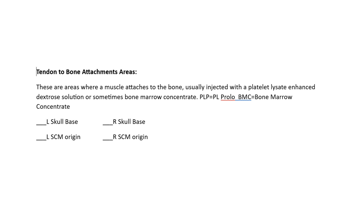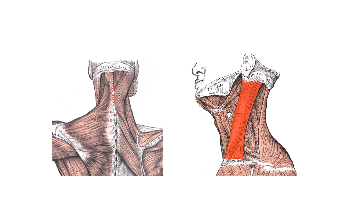We can also inject tendon to bone attachments, usually done with either a platelet lysate-enhanced prolotherapy solution or bone marrow concentrate. For example, we would be injecting right along the nuchal ridge of the skull. Another common area we could inject if it's tender on the patient is the sternocleidomastoid where it takes its insertion, or sometimes even down at its origin.